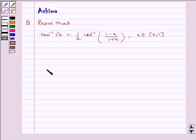Now the identity we will be using is 1 minus tan square theta by 1 plus tan square theta is equal to cos 2 theta.